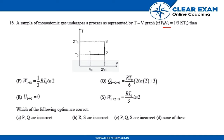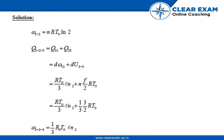So W(1→2) = nRT0·ln2, and Q(1→2) plus Q(2→3): solving it we get W(1→2→3) as (1/3)·R·T0·ln2.